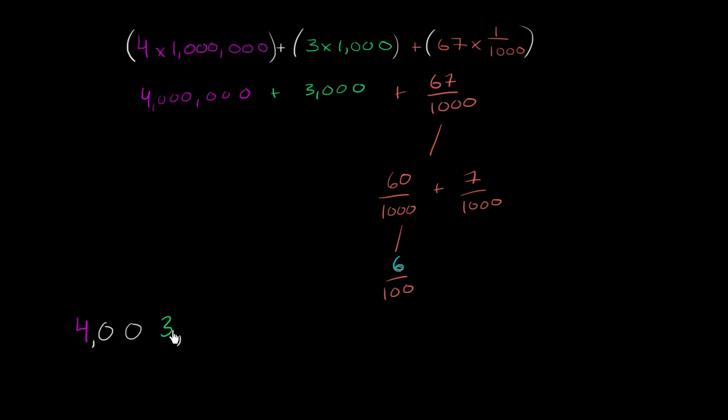And then we have no hundreds, no tens, no ones. We don't even have any tenths. But we do have some hundredths. We have 6 hundredths. And then we have some thousandths. We have 7 thousandths. So we put that 7 in the thousandths place.